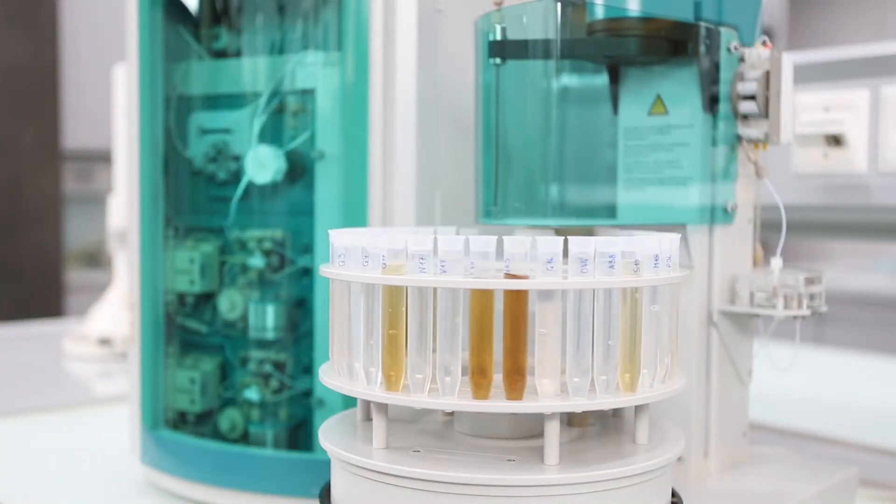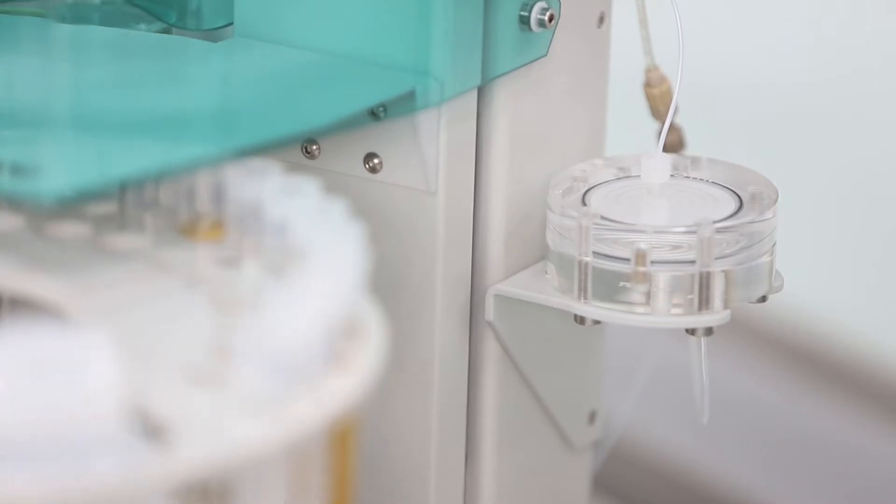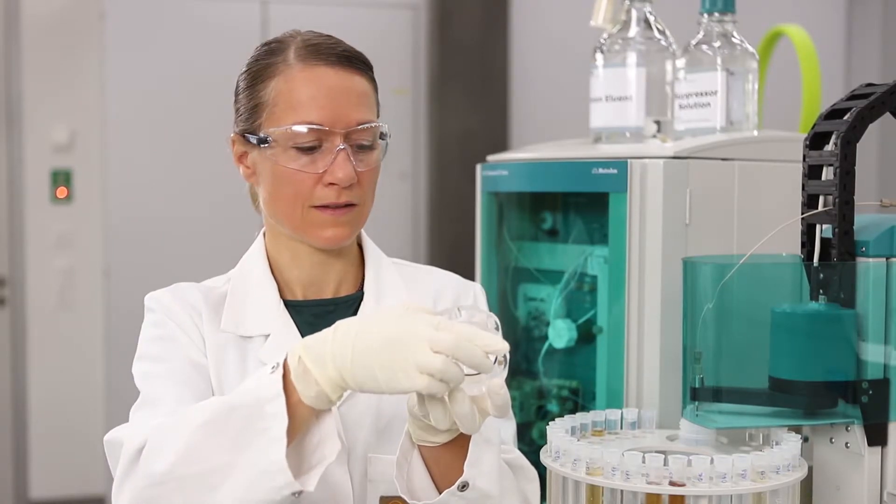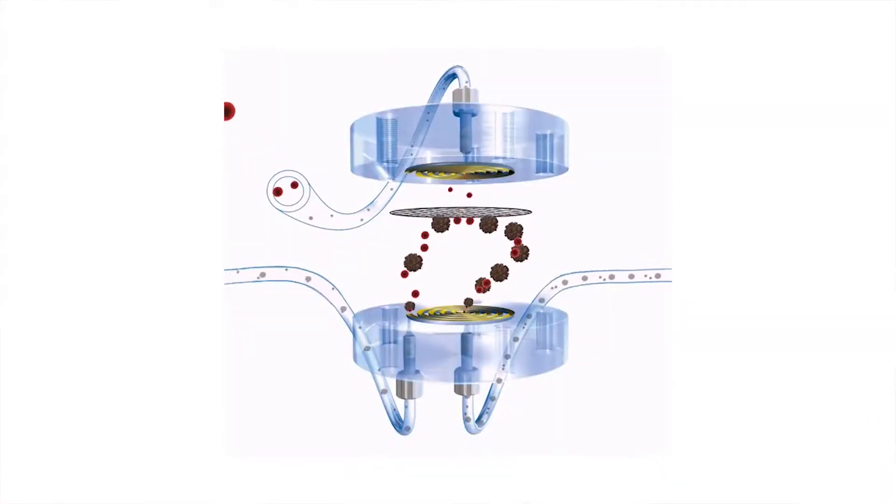From the sample processor, the sample automatically passes the ultrafiltration cell before being injected onto the column. When the sample flows past the filtration membrane, a part of it is filtered. After the filtration, the membrane is flushed from both sides so that no filter cake is formed and the membrane can be reused.